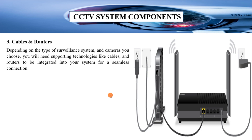Number three is cables and routers. Depending on the type of surveillance system and camera you choose, you will need supporting technologies like cables and routers integrated into your system for seamless connectivity. Routers will provide internet access to your video recorder, which will send the signal to your mobile phone and any other remote connections you want to make. Routers are very important in your CCTV system.